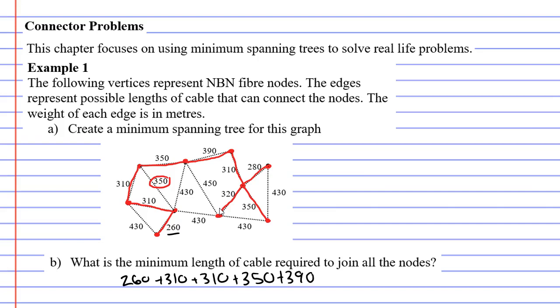plus 390, plus 310, and then I've got 280, 320, plus 350. If I add up all the edges I've colored in red, I should get the total length of wire required. When I added them all up, I got 2,880 meters, so I need 2,880 meters of cable to connect all these NBN fiber nodes.